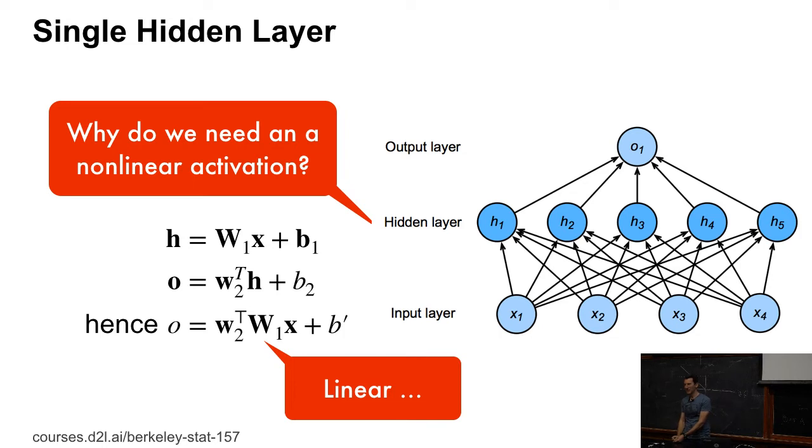So, let's say I have 10-dimensional input, a 10-dimensional output, and in the middle, I have maybe five hidden units. Then, I automatically force my entire network to be just of dimensionality five, in terms of basically rank of that matrix, and that considerably restricts what I can do. So, not only do I lose expressiveness, I can actually make things worse in a simple linear model. That's why we need an activation.